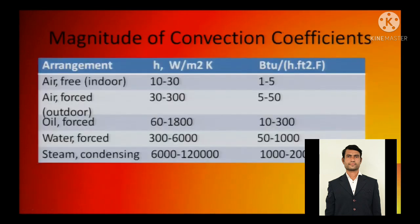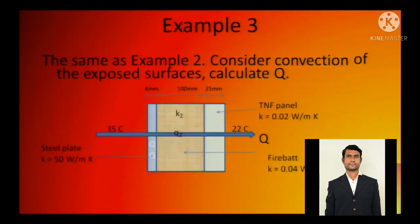On similar lines you have to solve this. The magnitude of convection coefficients as you can see: air free indoor has different amount of h, air forced outdoor has different amount of h, oil forced, water forced, steam condensing has different amount of h. So we all know that resistance equals L by Ka for conduction and resistance is 1 by Ha for convection. So this you need to remember.